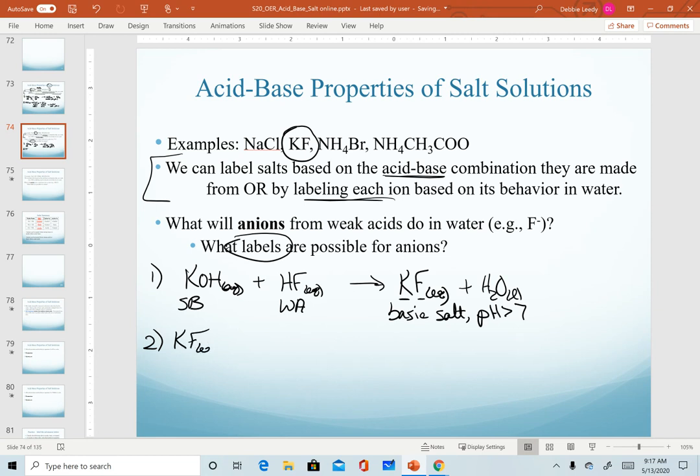For our second method, we start by breaking this salt apart into its component ions, otherwise known as dissociation. Now I label my ions based on what they're going to do in water. The potassium ion we know comes from a strong base, so this is going to be neutral. Fluoride, however, does not come from a strong acid. This is the conjugate base of a weak acid. Since this is the conjugate base of a weak acid, fluoride will be a basic anion.